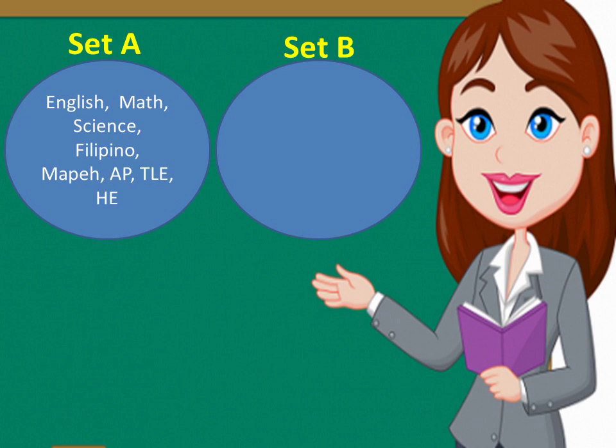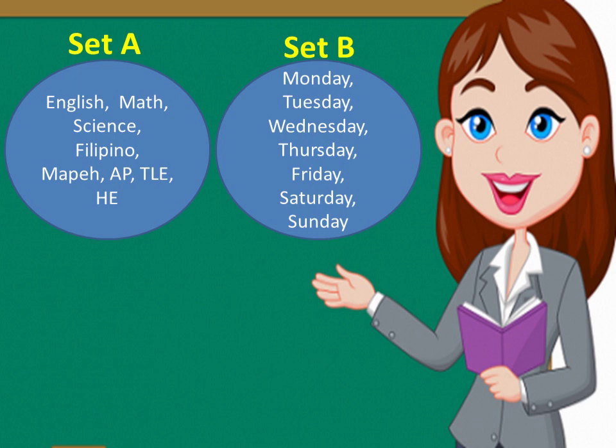In set B, it consists of days in a week. So, what are those? Monday, Tuesday, Wednesday, Thursday, Friday, Saturday, and Sunday. In this example, set A has 8 elements. Set B has 7 elements. So, therefore, both sets are finite sets.